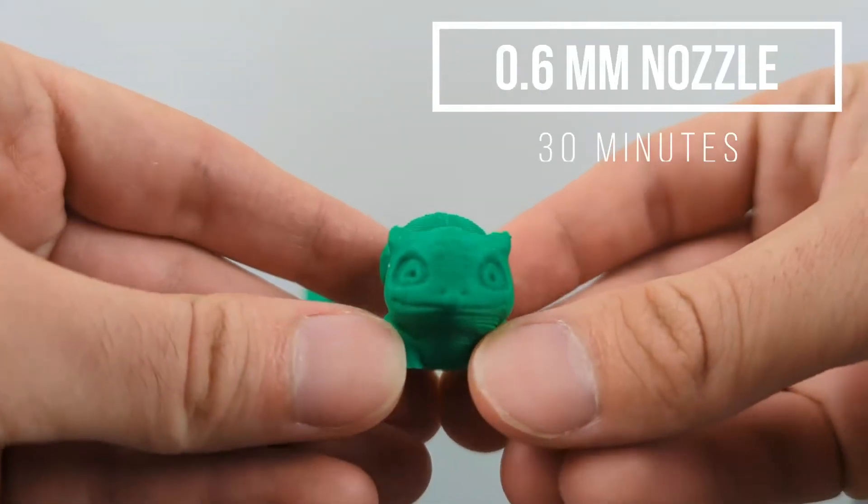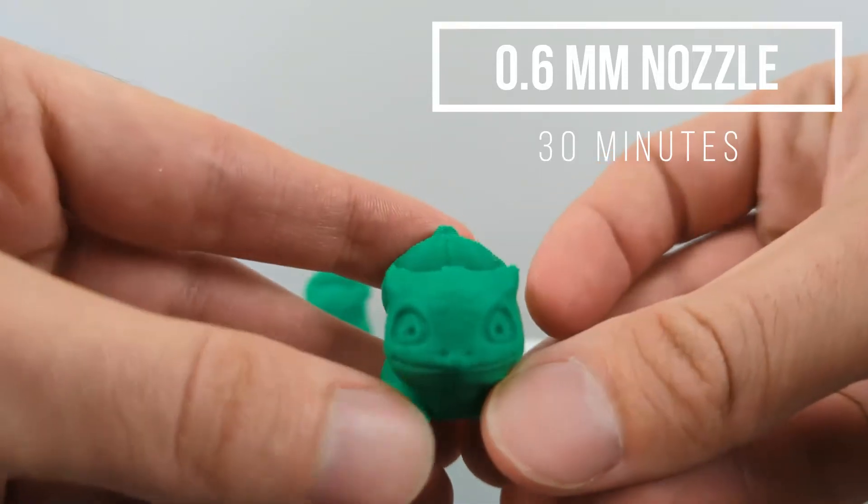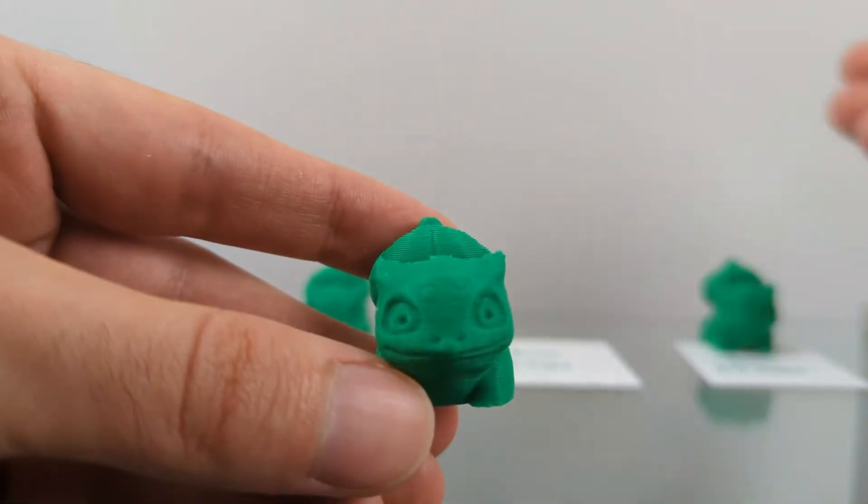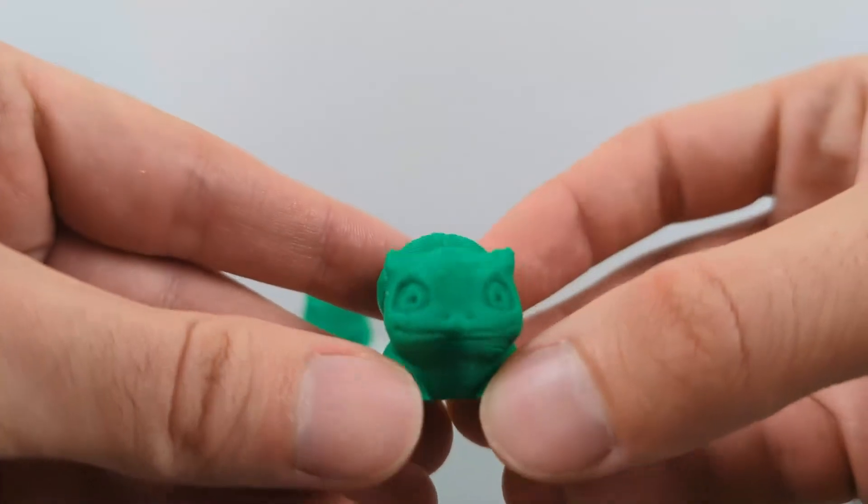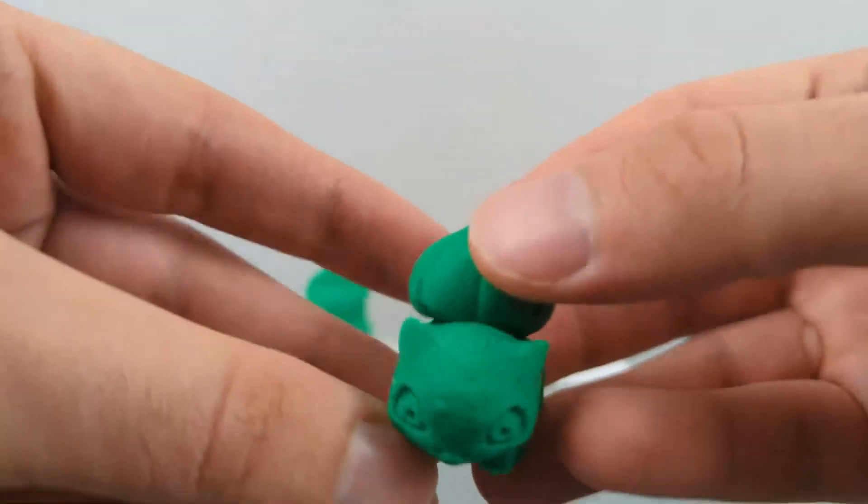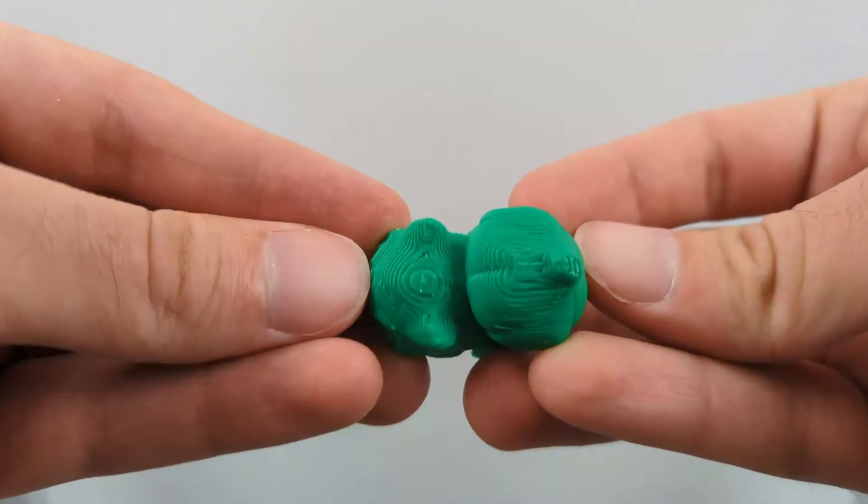Now let's go to the 0.6. I think the 0.6 looks much better than the 0.8, and it was only six minutes longer. So this is 30 minutes, and so you can see markings on his face. From the top you still see quite a bit of distortion and the resolution still doesn't look great.